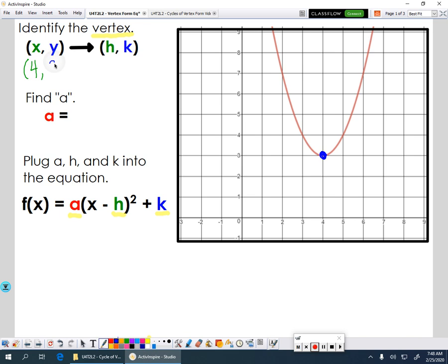Now that vertex, (4, 3), is actually your h and your k values. The x value, 4, is h, and the 3, the k value, the y value, is your k, 3.